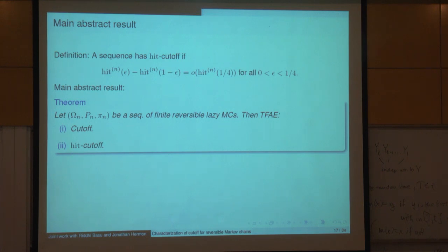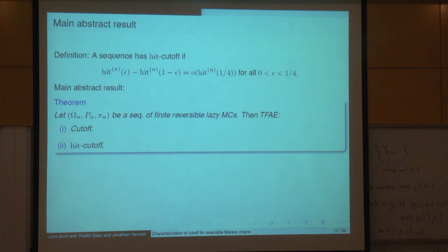One result we have says — this is progress toward a general theory of cutoff — that cutoff is equivalent to hitting cutoff. In fact, both of these conditions imply the product condition. Really, cutoff is equivalent to concentration of hitting times of the sets that are hardest to hit.